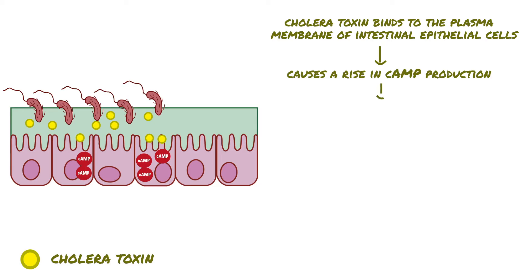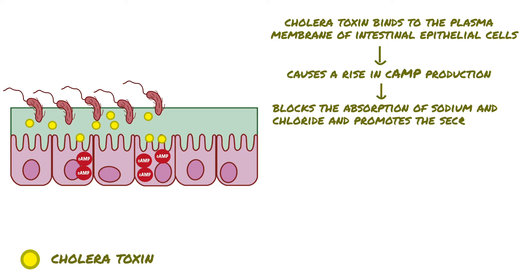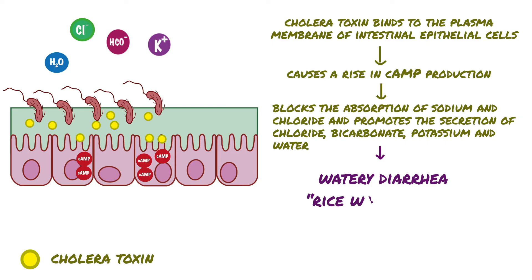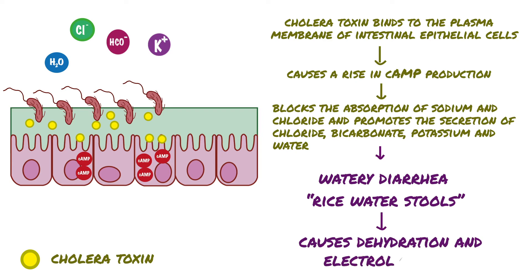The resulting high intracellular cAMP level blocks the absorption of sodium and chloride by the microvilli and promotes the secretion of chloride, bicarbonate, potassium, and water by the intestinal epithelial cells. The result is watery diarrhea containing masses of intestinal mucus and epithelial cells, called rice water stools, and this watery diarrhea causes dehydration and electrolyte loss.